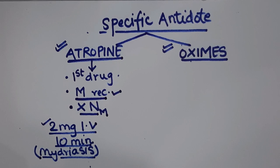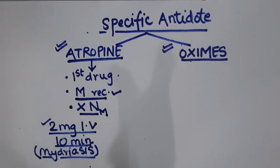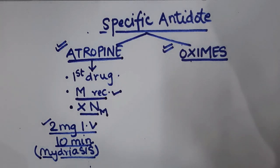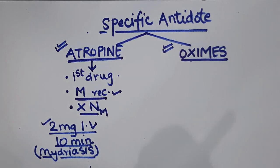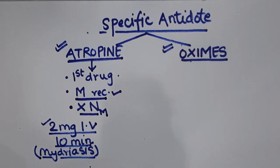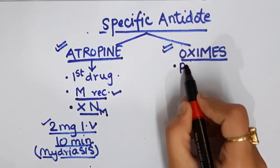Atropine competitively blocks all the muscarinic effects of organophosphorus compounds. Its role is important because these muscarinic effects are acting on the heart — decreasing heart rate and force of contraction — and increasing all types of secretions. However, muscular paralysis remains, which atropine cannot reverse, so we need oximes such as pralidoxime to restore muscle function.